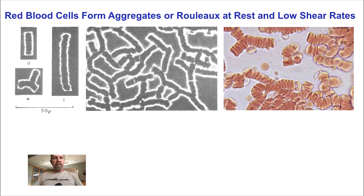So here we see what these aggregates or Rouleau of red blood cells look like at rest or very low shear rates. The flat surface of the discoid red blood cells gives them a large surface area to make contact with and adhere to each other, forming these Rouleau, which have been described as looking like a stack of coins.